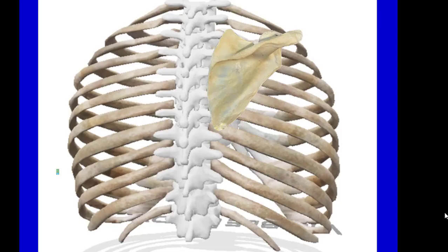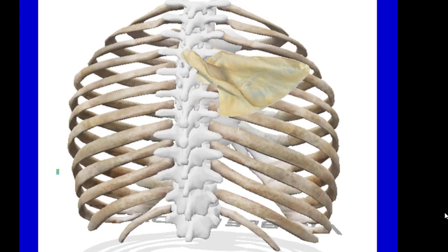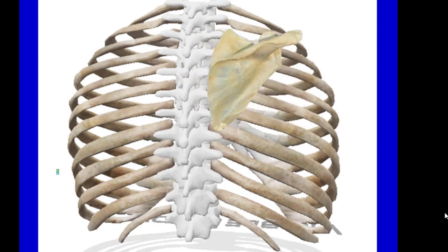To keep the scapula in normal anatomical position: the superior angle should face towards the head, the lateral angle should face laterally, the medial border of the scapula should face towards the spine, and the spine should face posteriorly or dorsally.